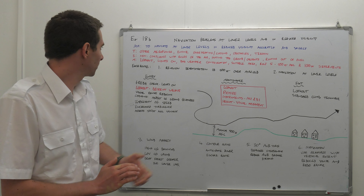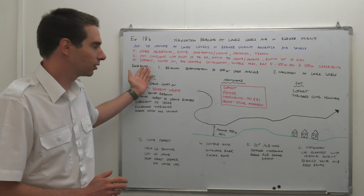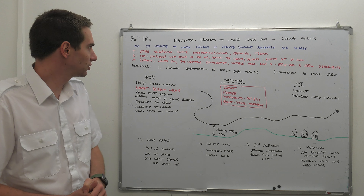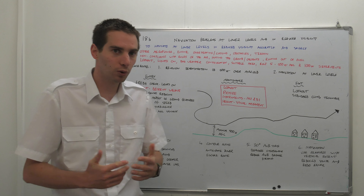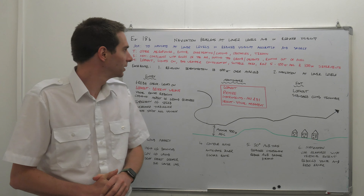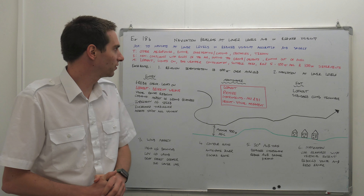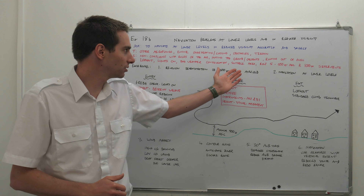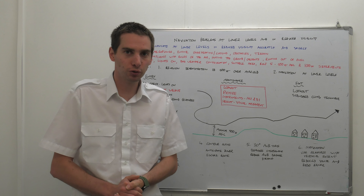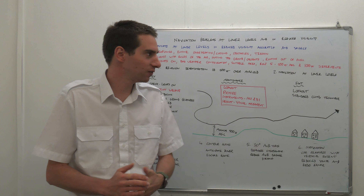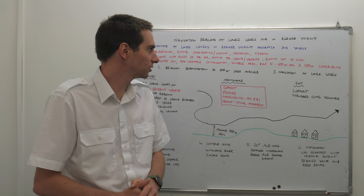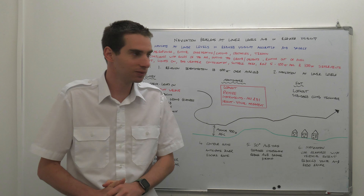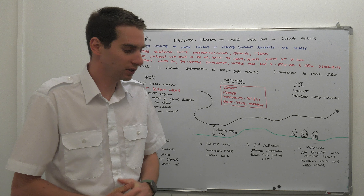Management: our lookout at all times, bring the lights on to be more visible, bad weather configuration, suitable areas to do this in. Remembering Rule 5: 500ft AGL and 1000ft over settlements.